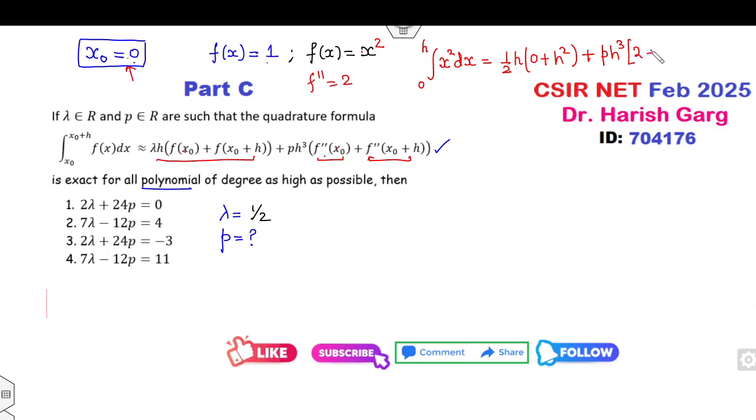Fine, second derivative is 2. This is my 2. So the left hand side is my h³/3. This is my h³/2. It is my plus 4 times h³. h³ will be cancelled out. It is 1/3 minus 1/2 is my 4p. This number is my -1/6. So p will be -1/24. So the value of p is my -1/24.